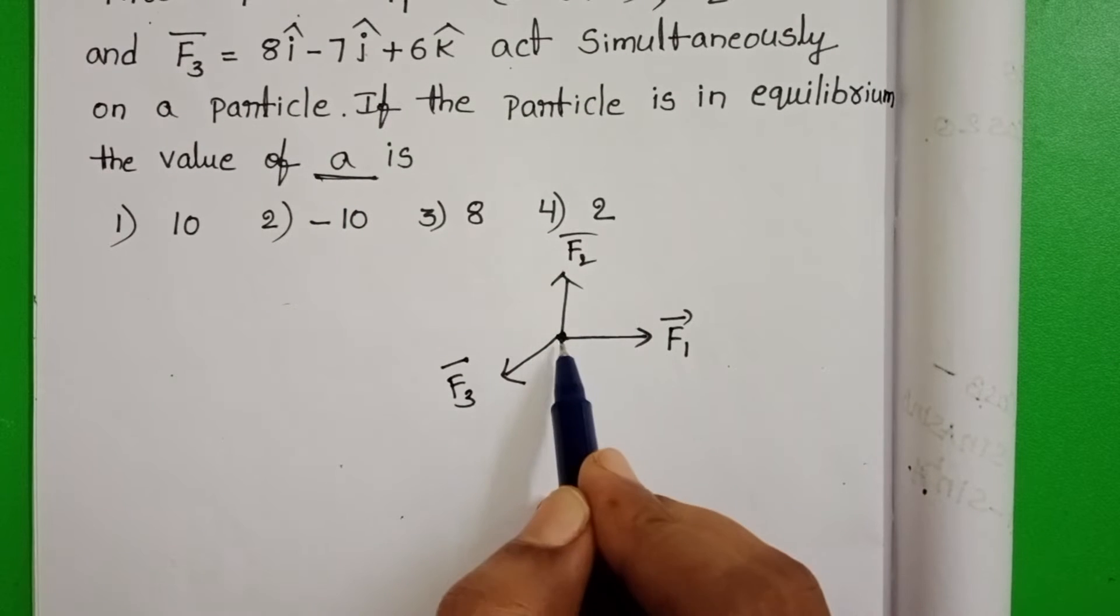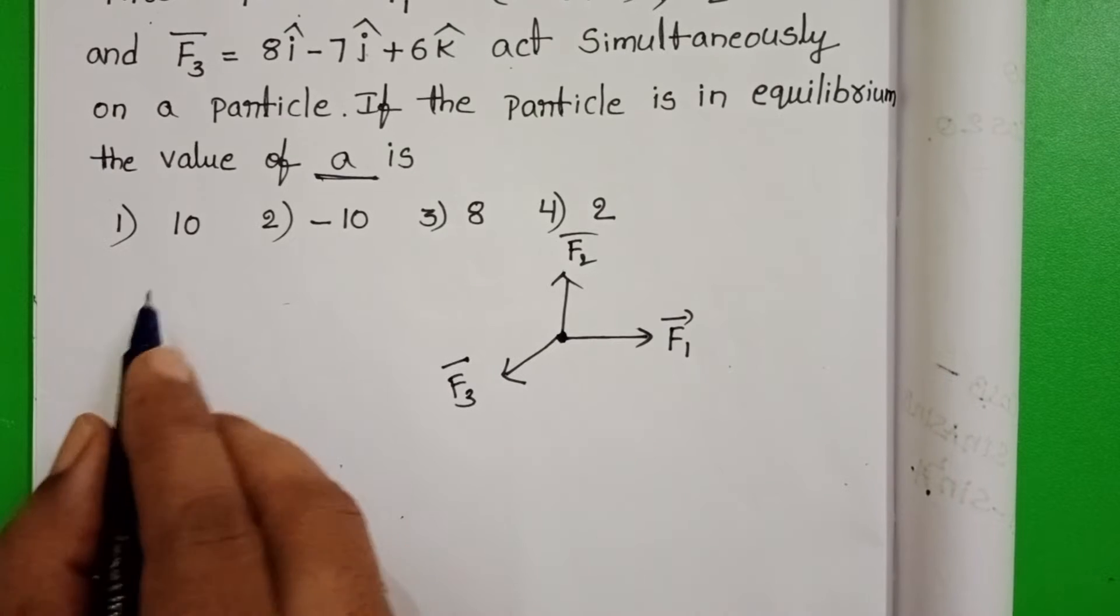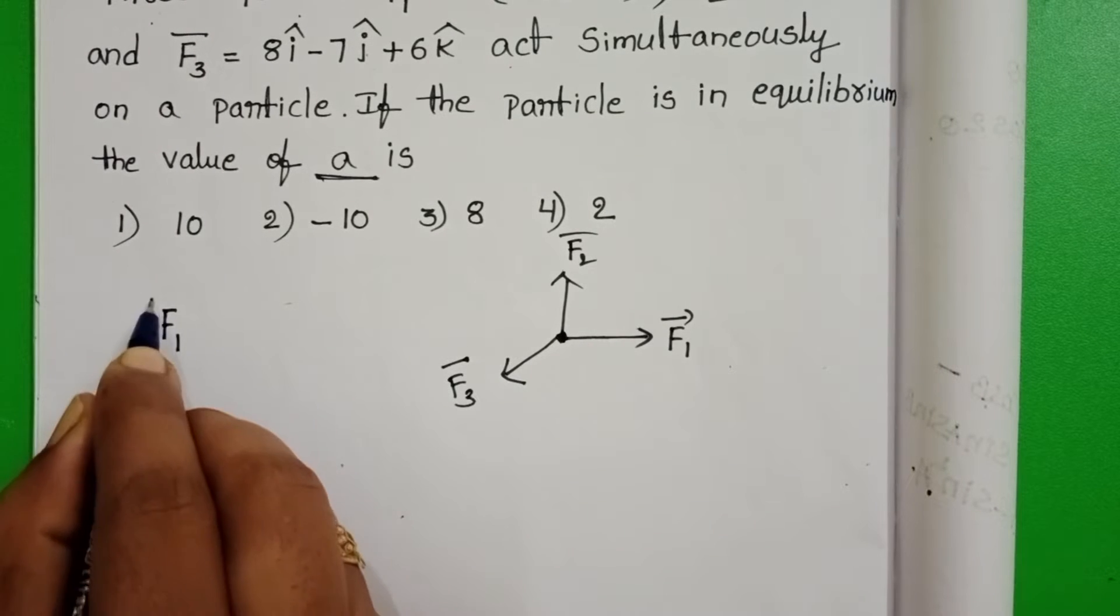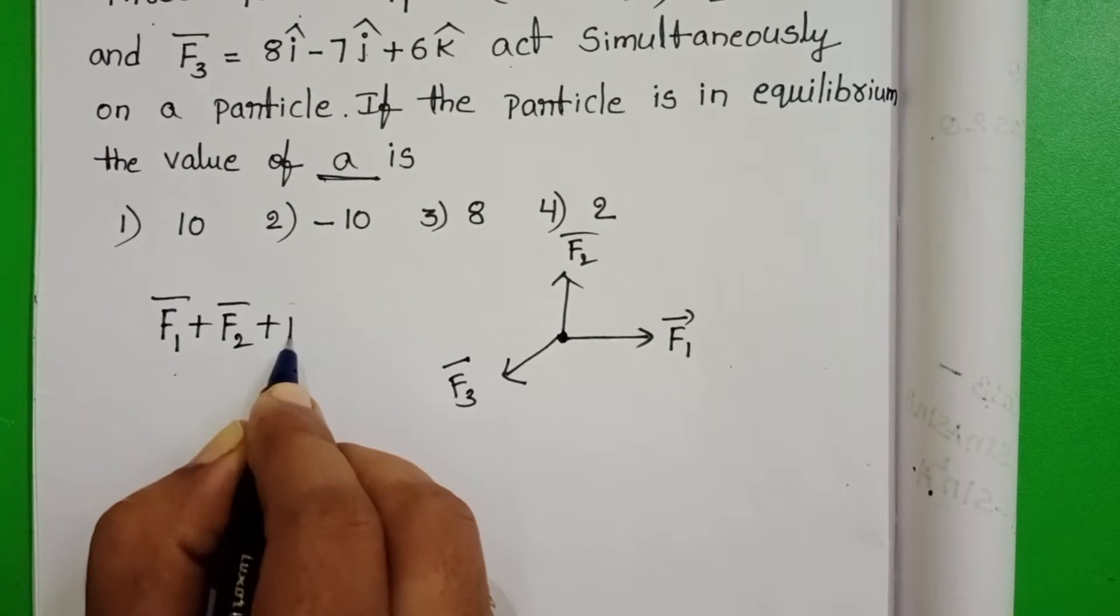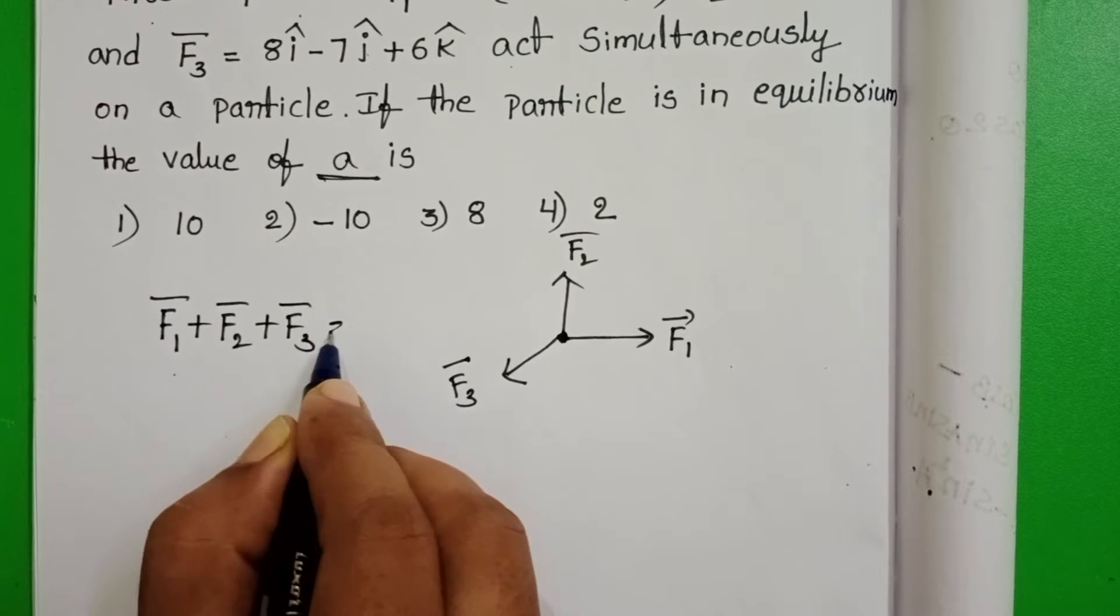When three forces act on the same particle but the particle is at equilibrium, the resultant force equals zero. So, F1 plus F2 plus F3 equals zero.